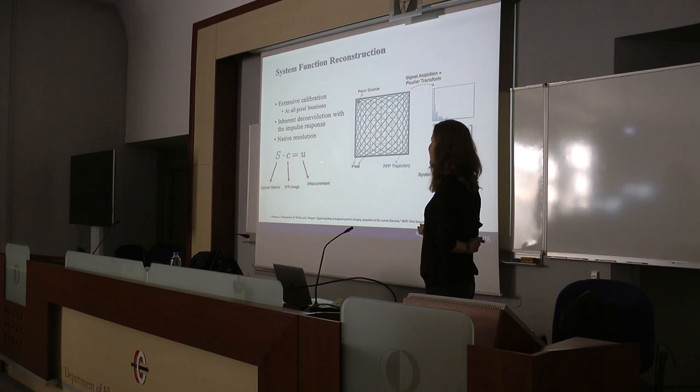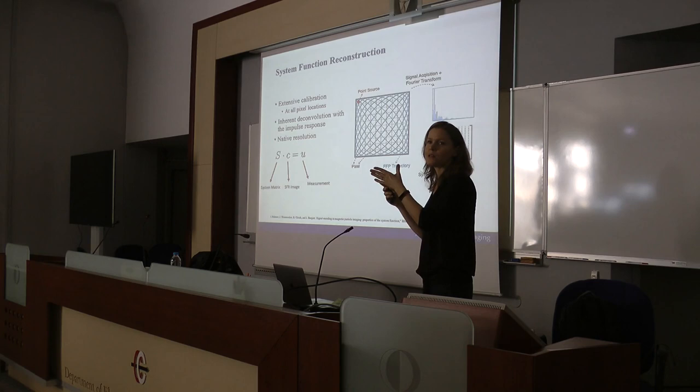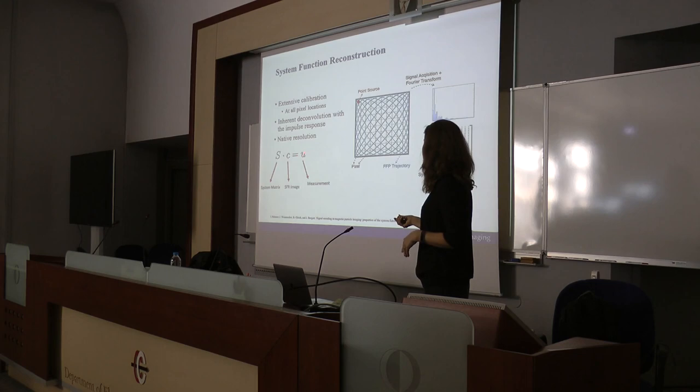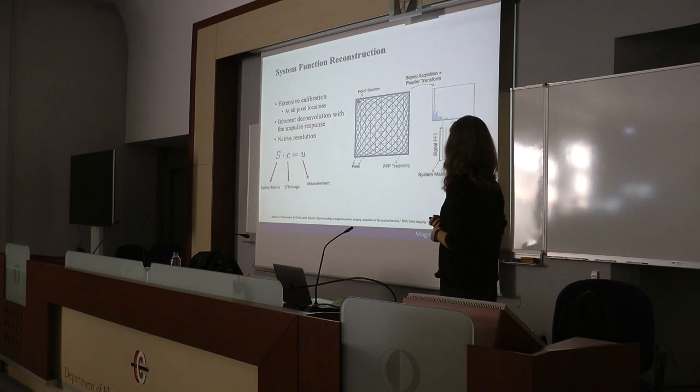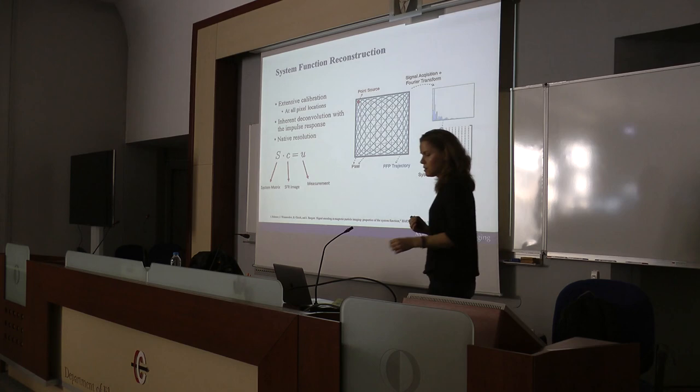For imaging, the object of interest is placed in the field of view, the same trajectory is run, the signal is recorded as vector U, and an inverse problem is solved to determine at which locations the nanoparticles were. The problem with this procedure is the length of calibration — it currently takes around 24 hours to perform this calibration on an MPI scanner.